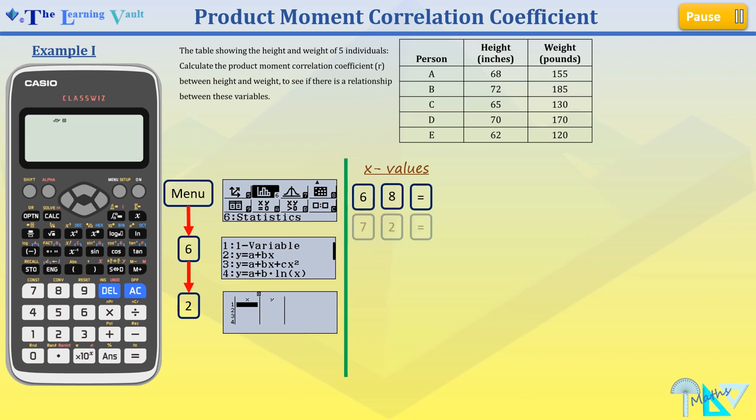So we have 68 and we press the equals. We press 72 and the equals sign, 65 equals sign, and we carry on.